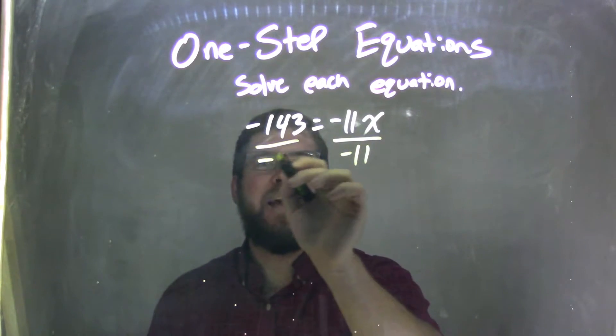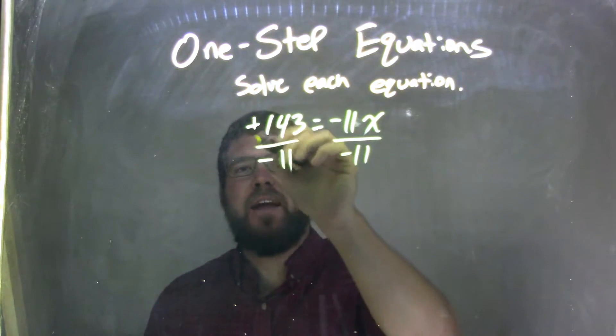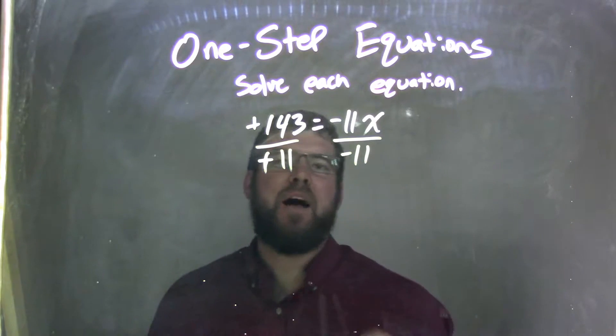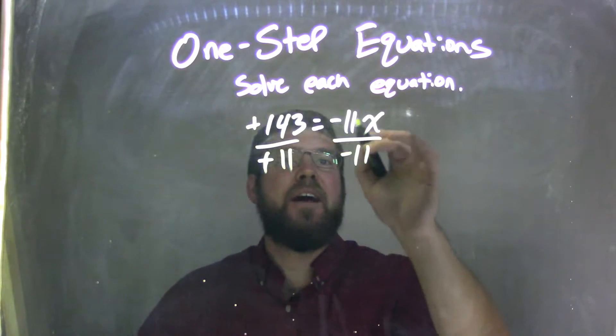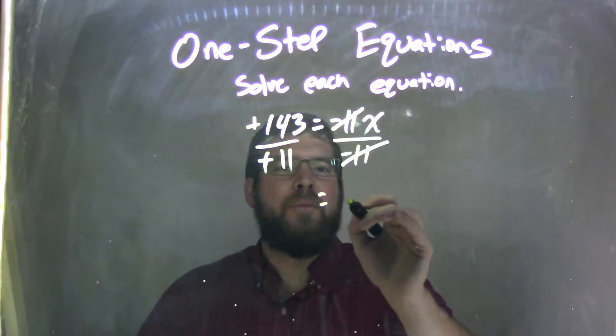So divide both sides by negative 11. Well, two negatives cancel. A negative divided by negative is a positive, so I can cancel that out here, and these negative 11s cancel. So I'm left with just x.